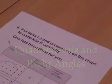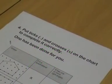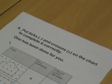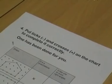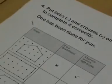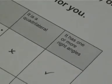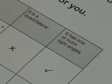Put ticks and crosses on the chart to complete it correctly. One has been done for you. You can see four shapes on your chart and two other columns — one says it is a quadrilateral and the other one says it has one or more right angles.